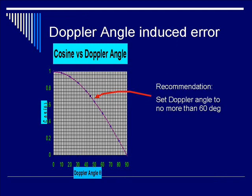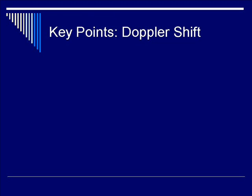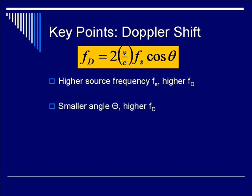In addition, if you measure at 60 degrees or more, the percentage of error as a function of the angle increases dramatically. So despite measuring at less than 60 degrees, you're looking at a minimum of 10 to 20% error in the best case scenarios. As a key point summary: higher source frequency gives a higher shift, a smaller angle gives a higher shift, and higher blood flow velocity also gives a higher shift.